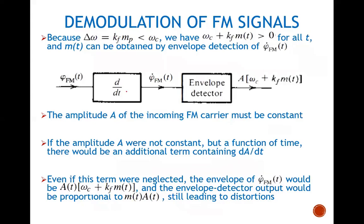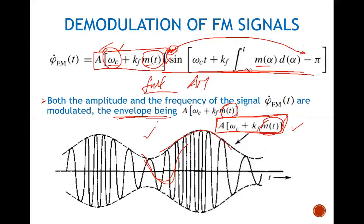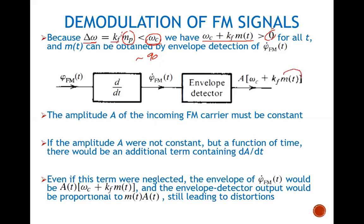Some important conditions must be noted. The frequency deviation delta_omega depends on kf multiplied by the maximum amplitude of the baseband signal. This deviation is always smaller than omega_c — for example, omega_c might be 90 MHz while delta_omega is in kilohertz. So the sum omega_c + kf*m(t) will always be greater than zero, which is why we have a full AM signal and can use envelope detection to detect m(t).